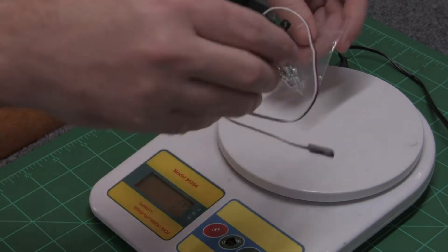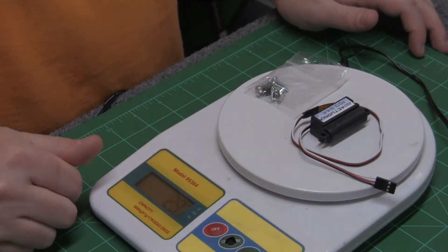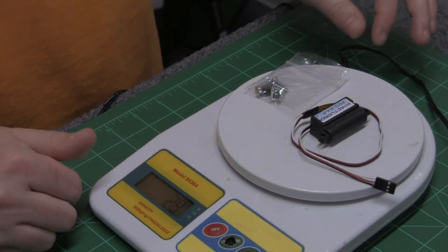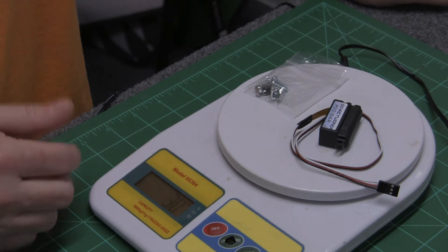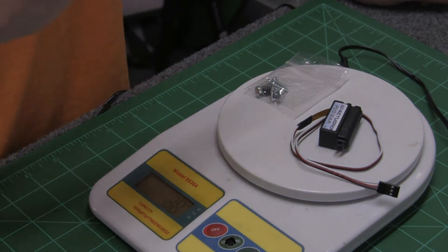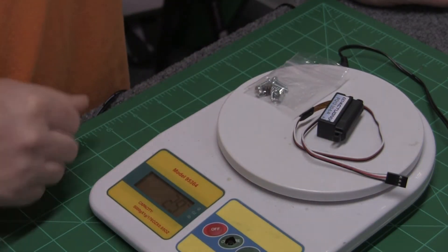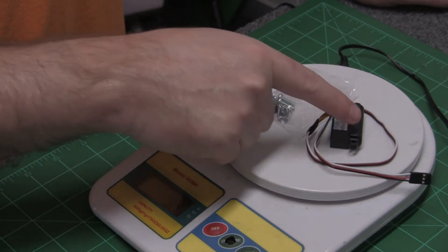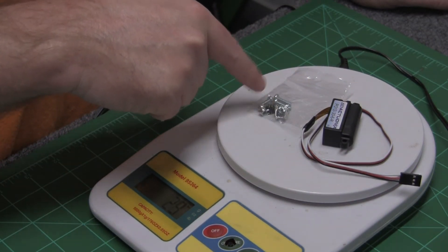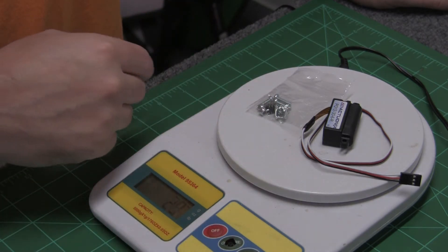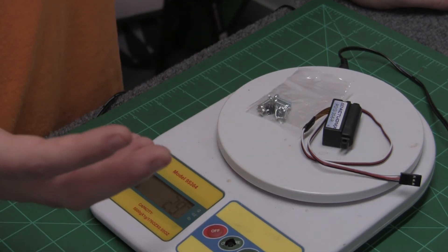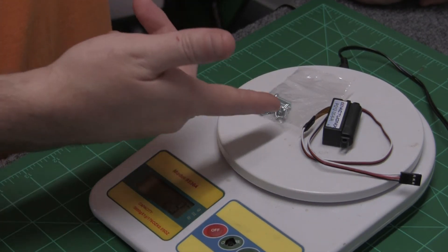but just to kind of give you an idea. So these, the Actuonix actuators with the servo, with the little actuator plus your mounts and all the screws, you'd only use probably two or three of those is 29 grams. They advertise 25 because that's, you know, you may not even use the mounting stuff.